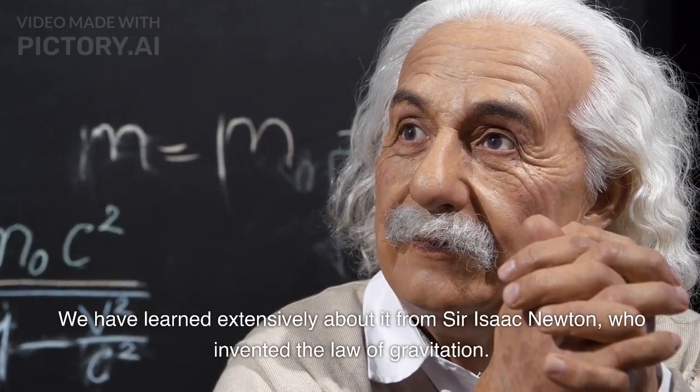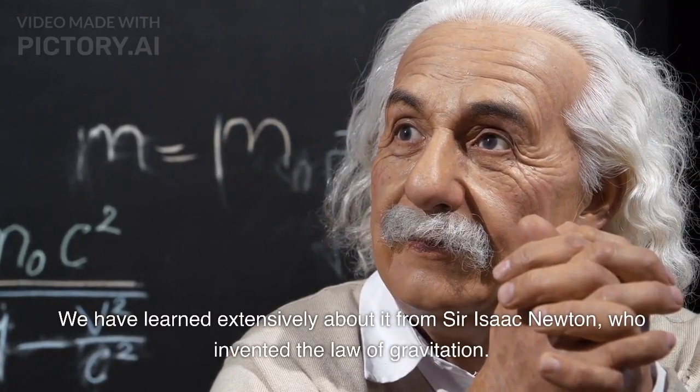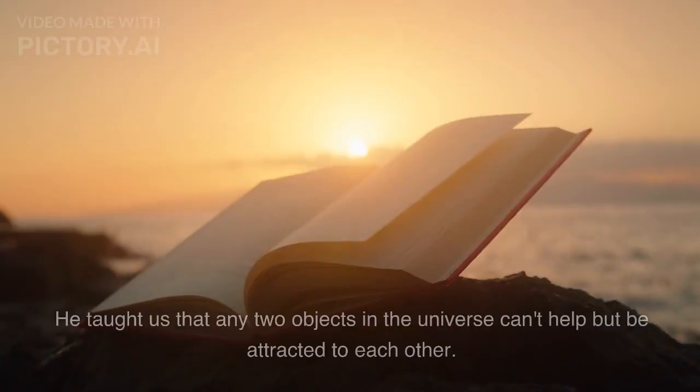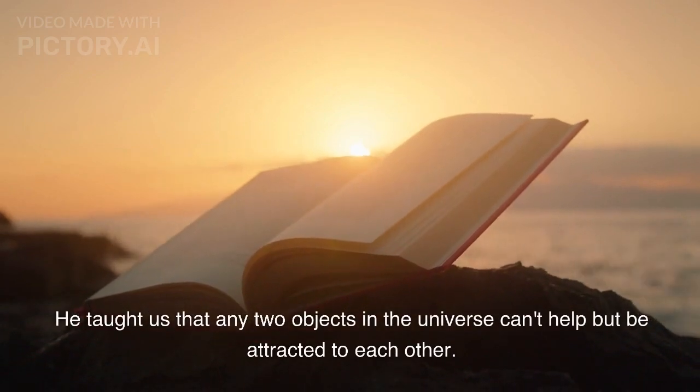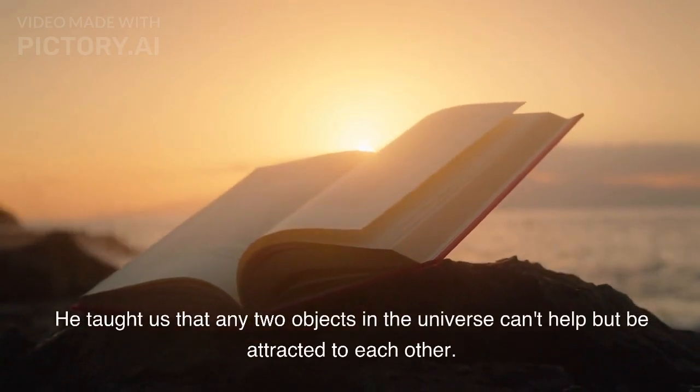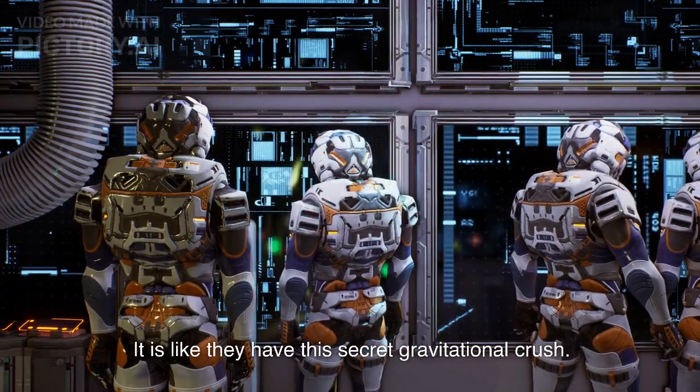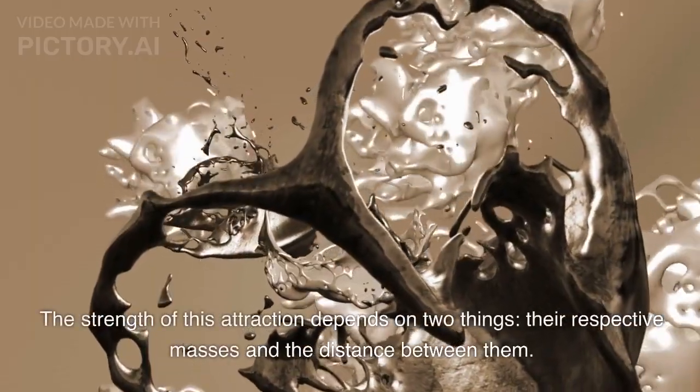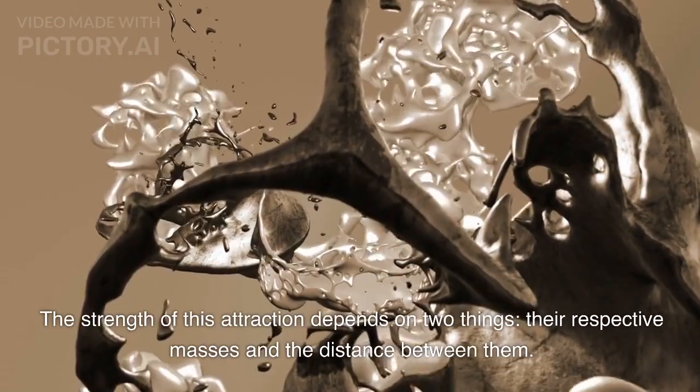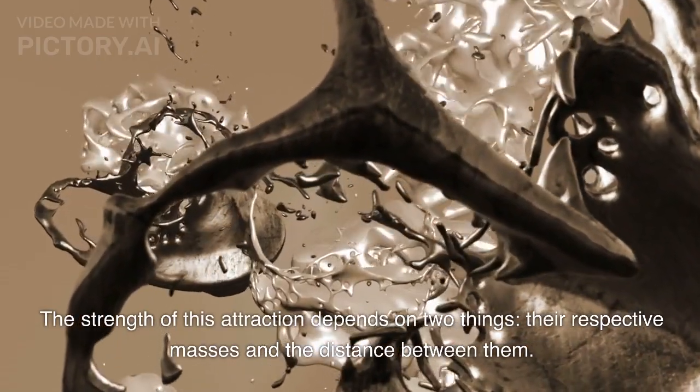We have learned extensively about it from Sir Isaac Newton, who invented the law of gravitation. He taught us that any two objects in the universe can't help but be attracted to each other. It is like they have this secret gravitational crush. The strength of this attraction depends on two things: their respective masses and the distance between them.